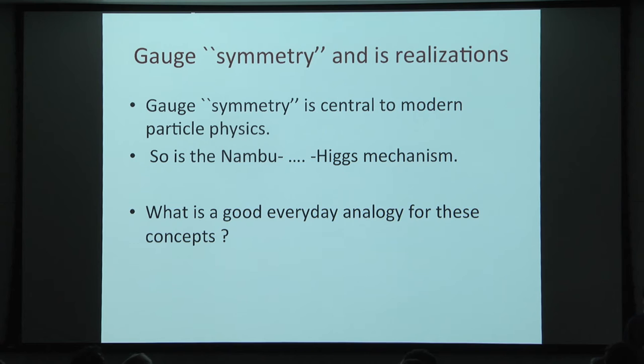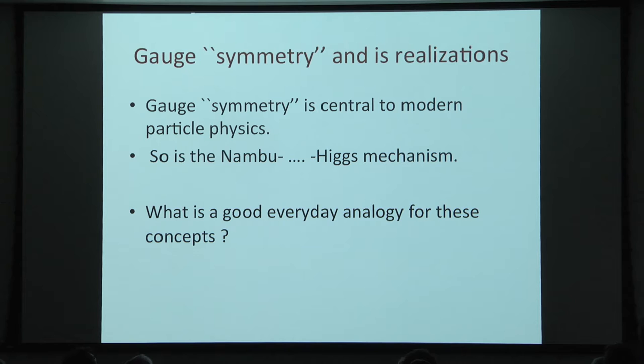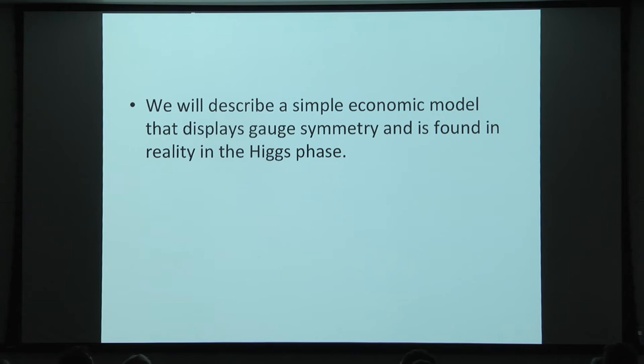One question that arises — and this arose for me personally when I had to give some public talks on the Higgs — is: how do you explain it correctly? Do you say that you have a particle that moves through some honey, and that was the Higgs mechanism? I think the problem is that in order to explain honestly what the Higgs mechanism is, you need to explain what gauge theories are. So you can ask: is there a good everyday example of gauge theory? There is a nice example — I'll discuss a simple economic model that displays gauge symmetry, and it's found in reality in the Higgs phase.